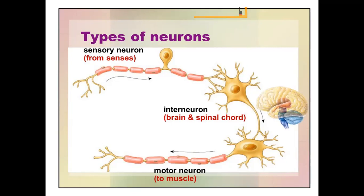Suppose you are touching an extremely hot cup. What happens? You immediately remove your hand. Now who is carrying this information from your skin to the brain? The type of neuron which carries the nerve impulse from your skin — that is the receptor — to the brain and spinal cord, which is known as the central nervous system, is called the sensory neuron. So the sensory neuron carries the nerve impulse from the receptor to the central nervous system for interpretation.